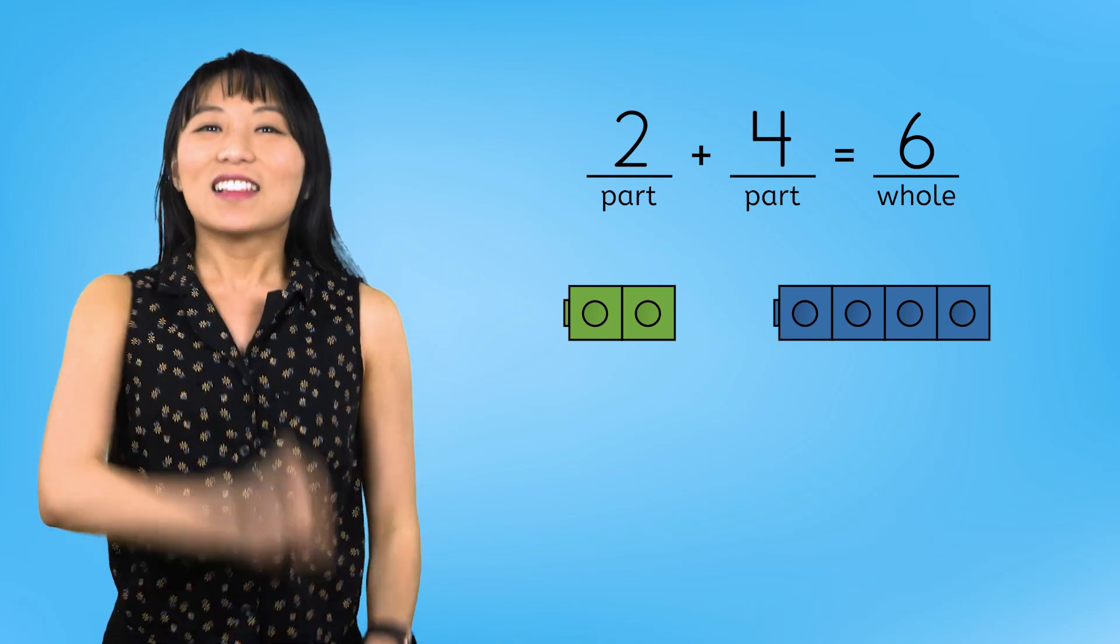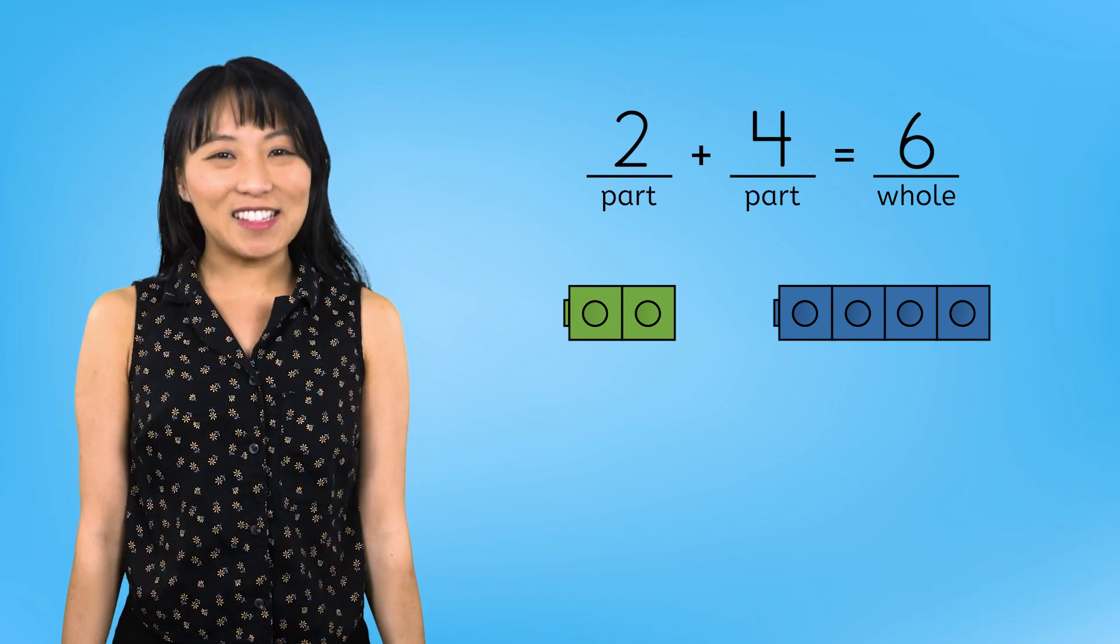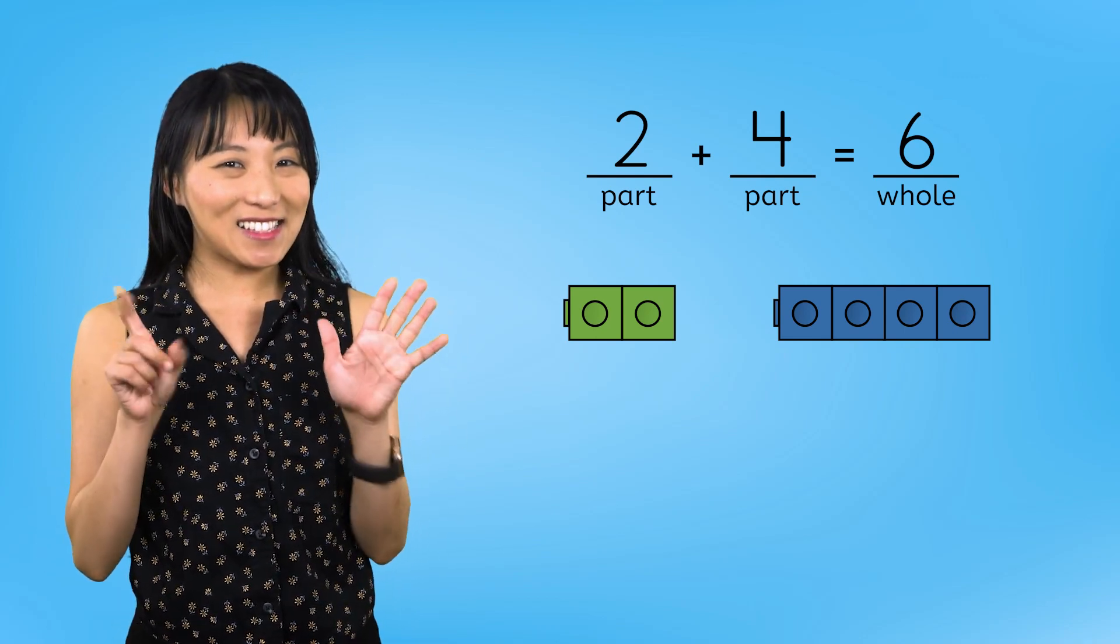Awesome! Let's find one more way to compose 6. We started with 1 cube, then 2 cubes. Now let's start with 3 cubes. Perfect! Now we just need to add cubes and count on until we get to 6. Here we have 3, now 4, 5, and 6. We have our 2 parts.